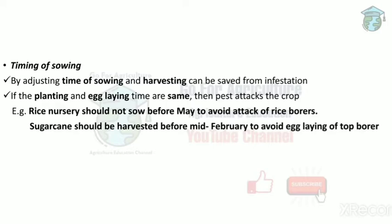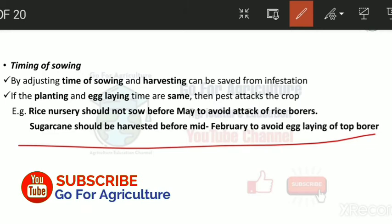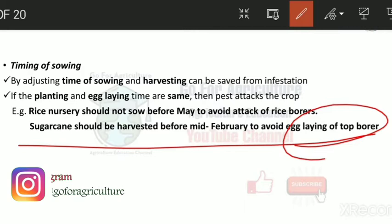Examples of time of sowing: rice nurseries should not be sown before May to avoid attack of rice borers. Sugarcane should be harvested before mid-February to avoid egg laying of the top borer, since the top borer's egg-laying capacity is at mid-February only. If sugarcane is harvested before then, the top borer has no plant to lay eggs on and dies.